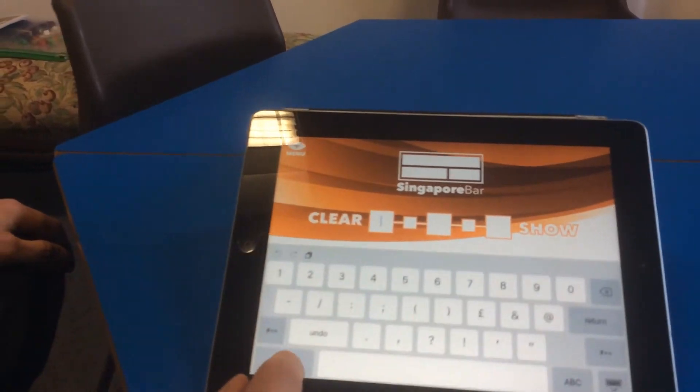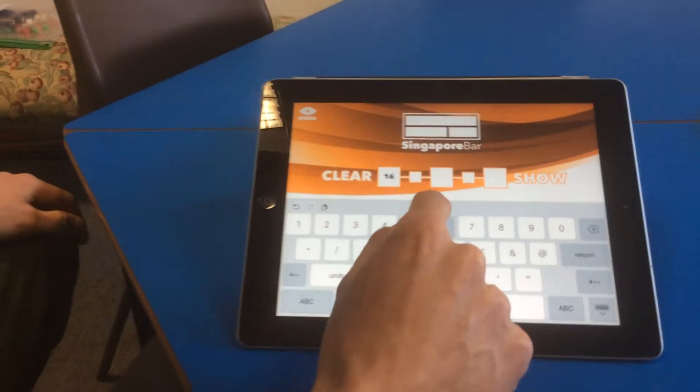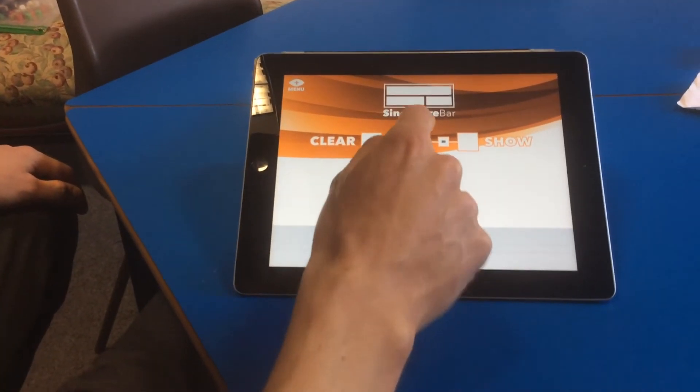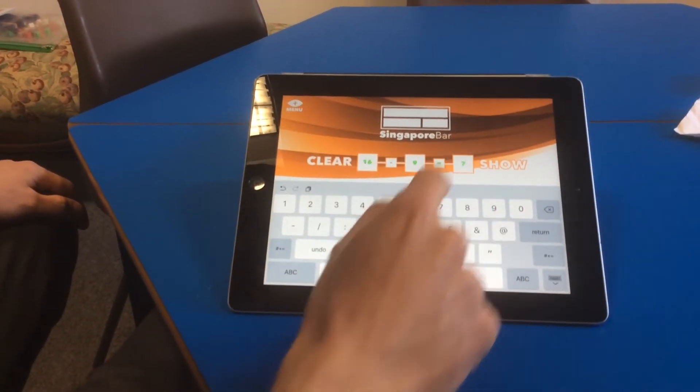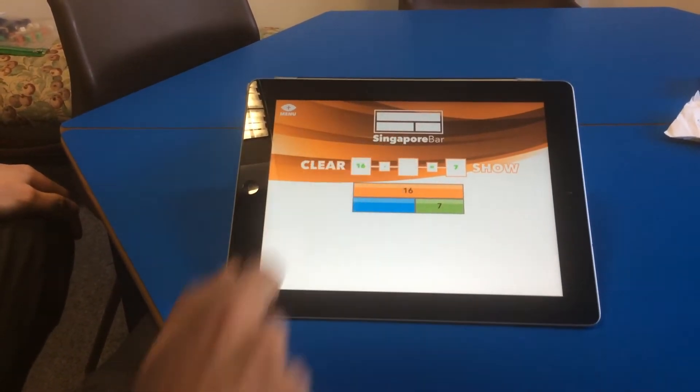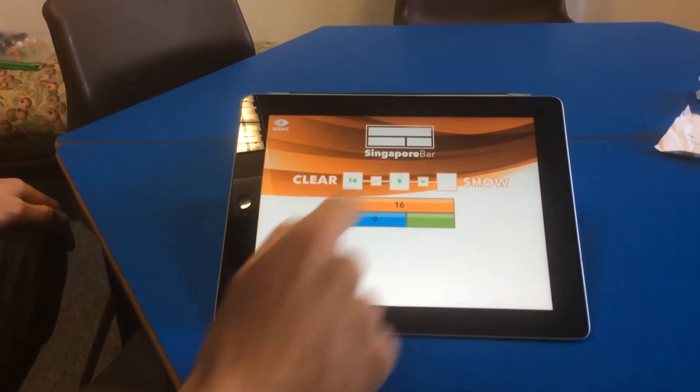So the first section that we'll have a look at is the Singapore bar section. Brilliant for creating accurately proportioned bar models so I can structure the questions in different ways. This time I'm going to go for 16 subtract 9, hit that box and it'll automatically populate it. I can hide any of those sections that I want to. I could hide both of them,